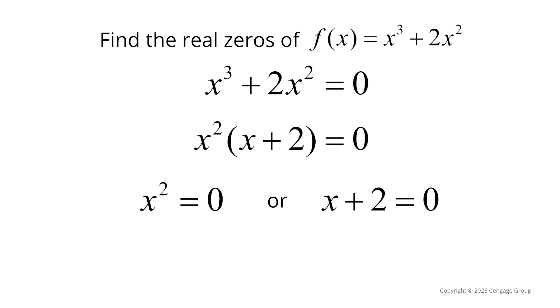Next we solve for x. X squared equal to zero, we can take the square root on both sides, so we end up with x equals zero. For x plus 2 equal to zero, we can subtract 2 on both sides, giving us x equals negative 2.